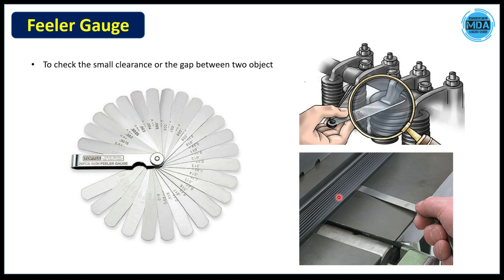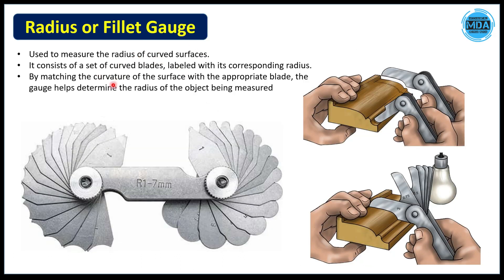Next is the feeler gauge. If there is a very small gap between two objects, the feeler gauge is used to check that small gap or clearance. We insert different thickness feeler blades between the two components and check which blade fits completely. The thickness of that fitting blade indicates the gap between the two components.